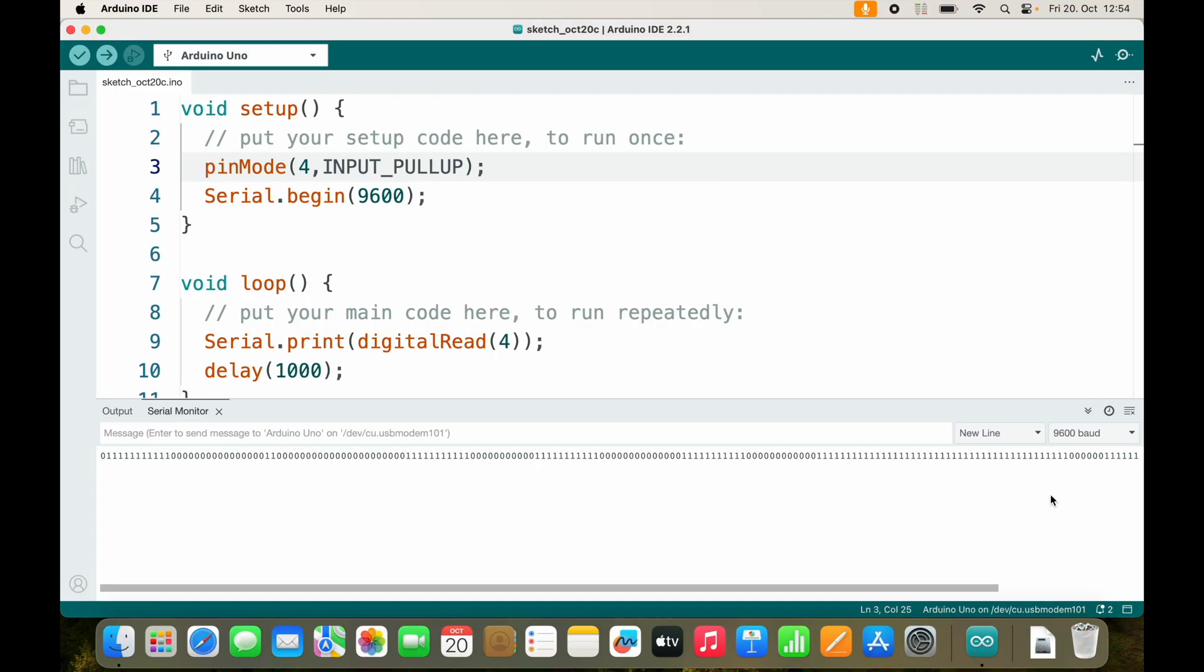And just like in our first lesson, we can also use println to get new lines. And be sure to enable auto scroll.